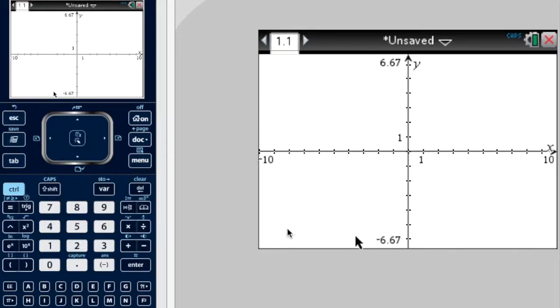This video is going over how to solve an inequality using graphical methods. Now the inequality we're going to look at is 3x plus 1 over x minus 2 is less than or equal to 2x minus 6.